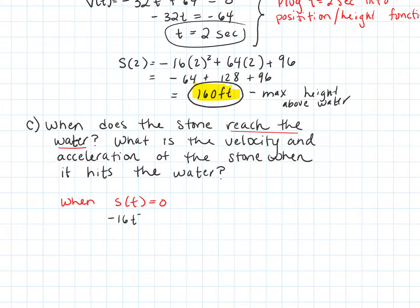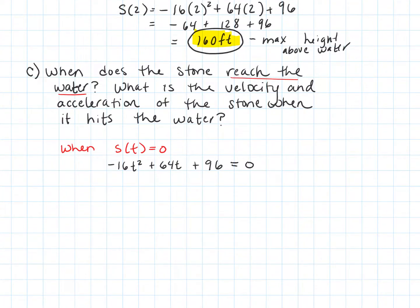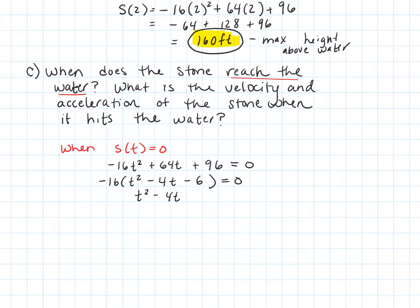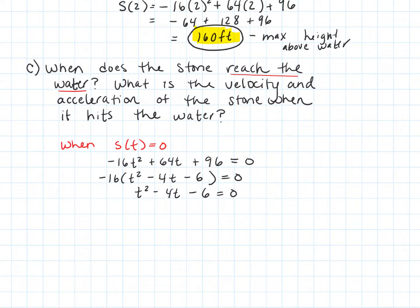Setting negative 16t squared plus 64t plus 96 equal to zero, we factor out a negative 16, leaving t squared minus 4t minus 6 equals zero. That doesn't factor, so we use completing the square. Since the leading coefficient is 1 and the middle term is even, completing the square is efficient here, though the quadratic formula works too.